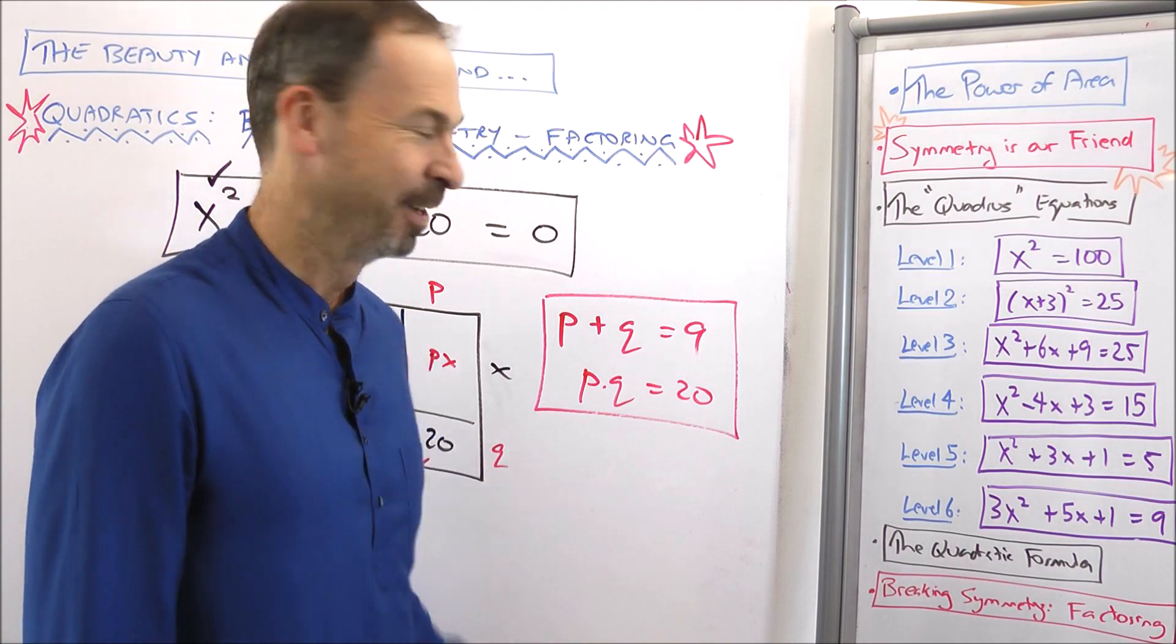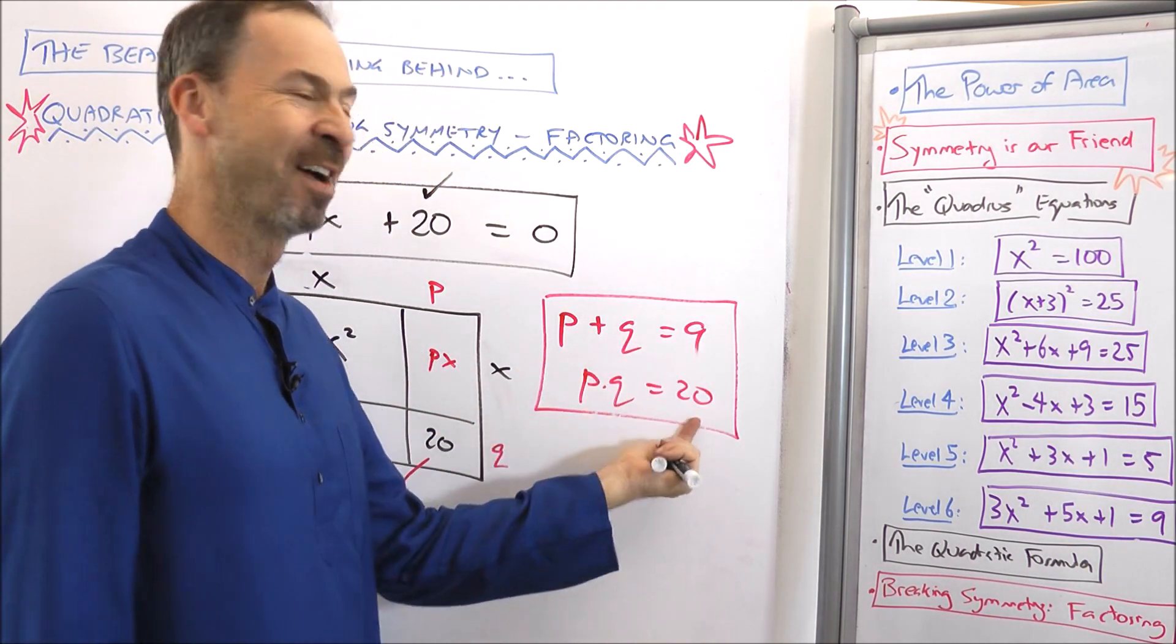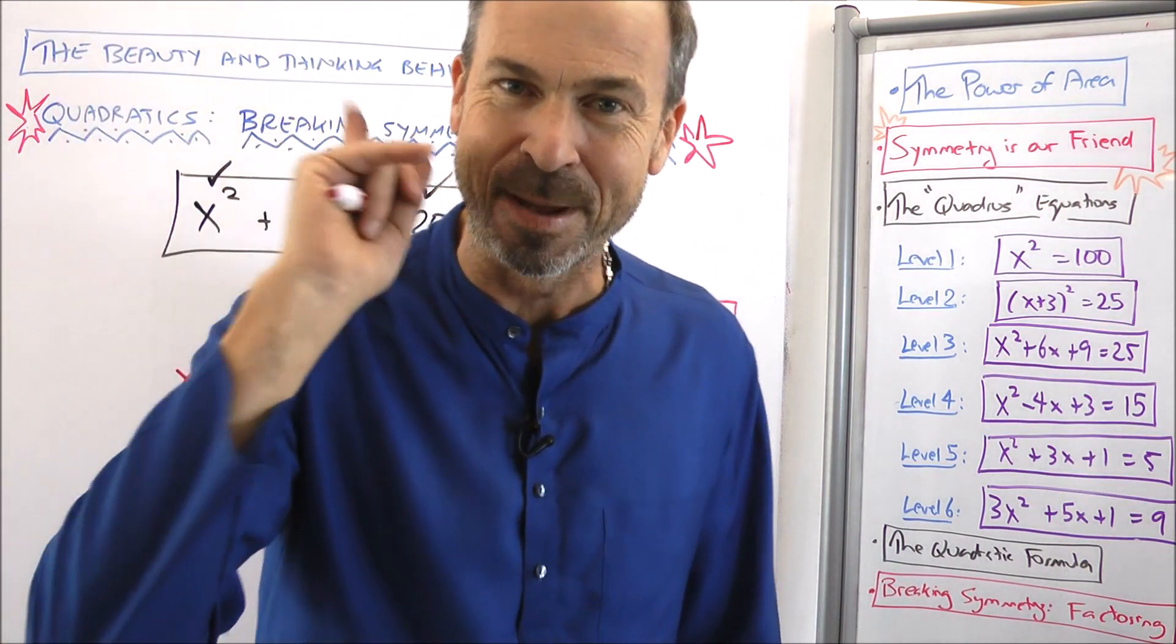But can you think of two factors of 20 that add up to 9? Well, yeah, 4 and 5. 4 plus 5 is 9. 4 times 5 is 20. Alright, so things are looking good. We're making good guesses here.